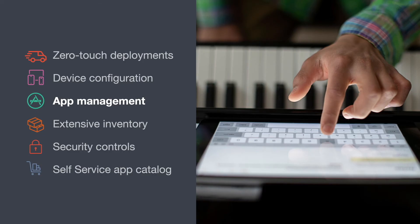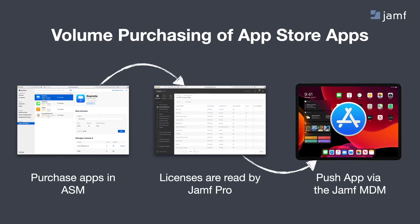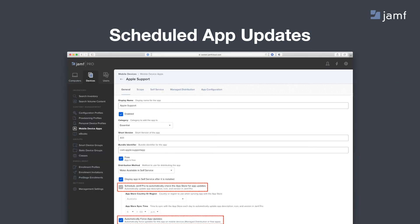We're deployed and configured, but do we have all the right apps? If we're leveraging App Store apps, we can use Apple School Manager to buy all the necessary licenses. In this case, we're getting 100 licenses of Keynote — that's a free app, but we still need to procure the licenses to deploy it via MDM. Those licenses are then read by Jamf Pro or Jamf School, which scopes them to a specific device or groups of devices. Then via the MDM framework, those apps are installed over the air — no Apple ID required. As a bonus, you can also schedule updates to happen automatically at a specific time.